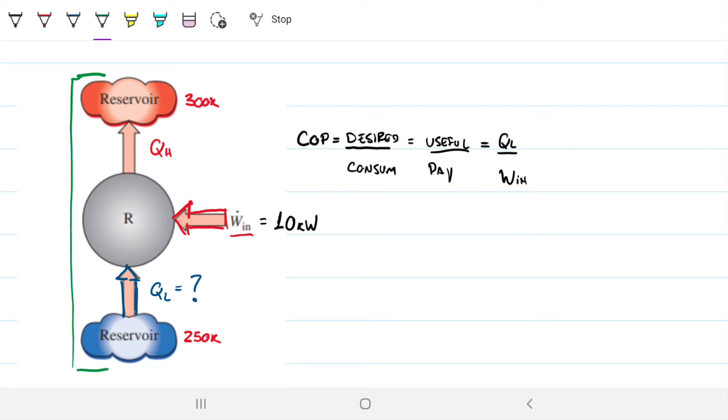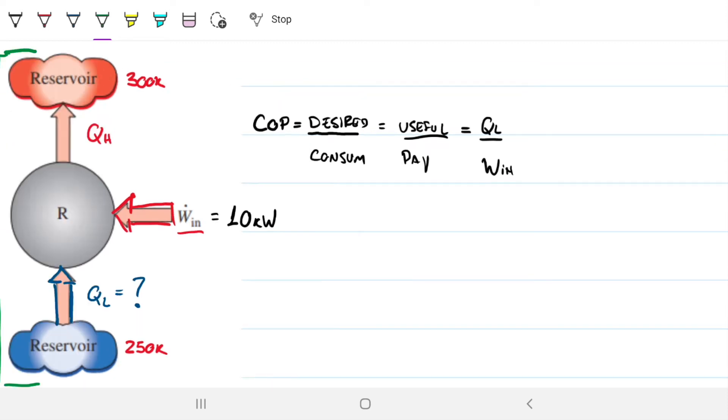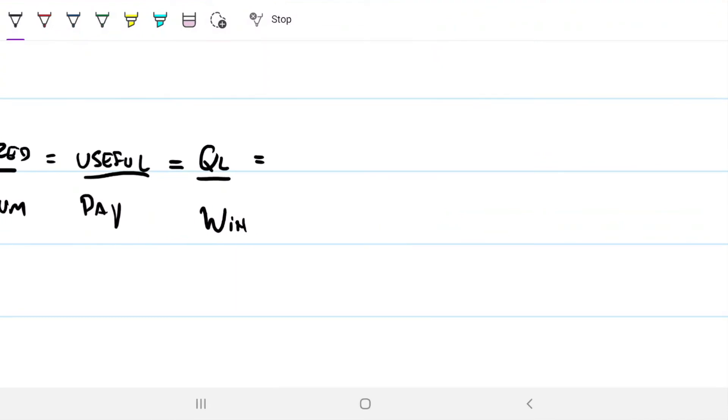So how can I do that? Well, I know that the coefficient of performance is given by QL divided by work. And like we talked in the previous video, if we use the first law of thermodynamics, we can show that QHot has to be equal to work plus QL.